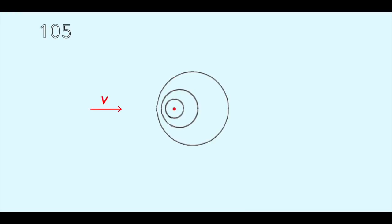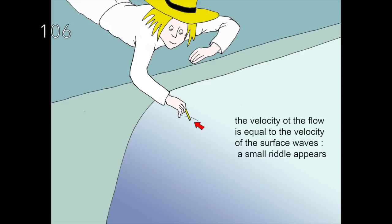In the next image, Archibald plunges his toothpick in a place where the velocity of the flow is equal to the velocity of the surface waves. Then, a riddle perpendicular to the flow forms. See the corresponding image of the wave propagation.